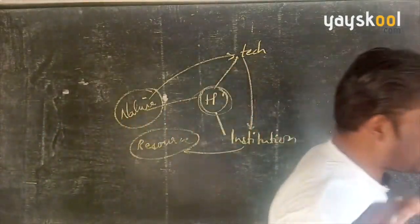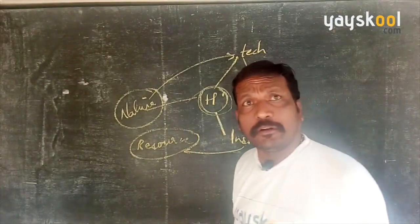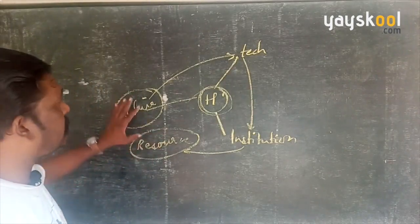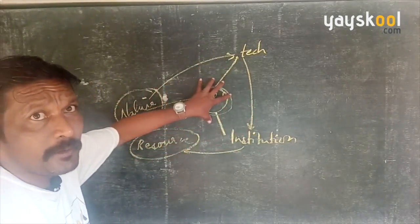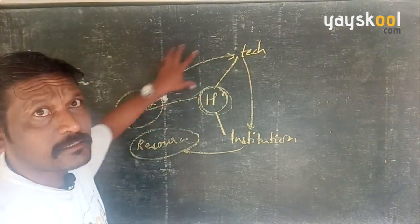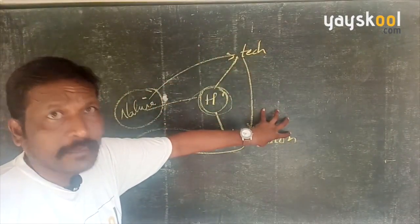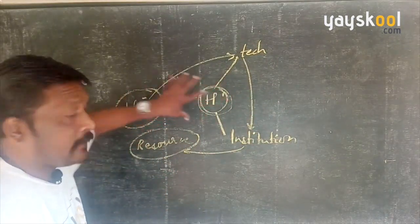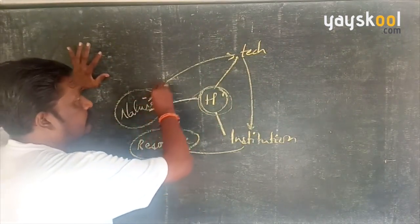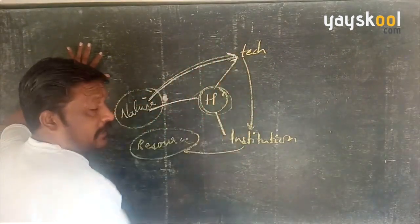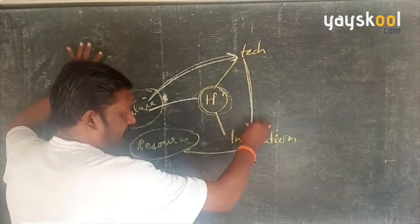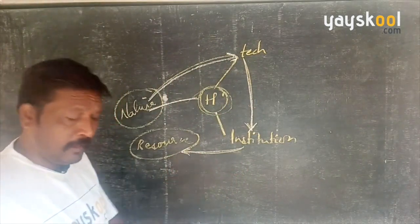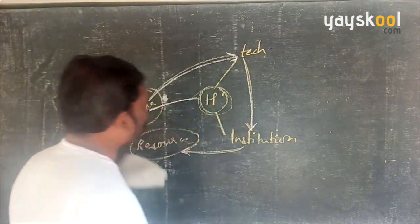Human beings are also a resource — called human resource. In 9th standard, in the second chapter on factors of production, human resource is listed as a resource. In short, there is an interrelationship: human beings interact with nature, use technology, and set up institutions to convert things from the environment into resources. So: human beings interact with nature, develop technology, and set up institutions to convert environmental things into resources.